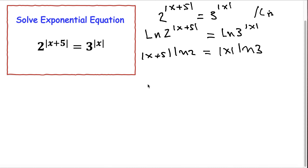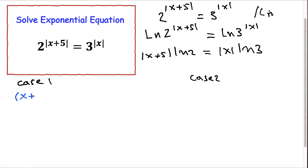When we are in this situation with absolute values in the equation, we have two cases. So let me write Case 1 and Case 2. In Case 1, we have (x plus 5) times LN 2 is equal to x times LN 3.